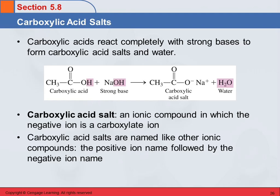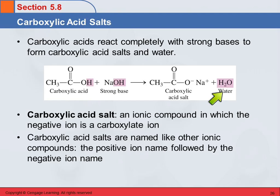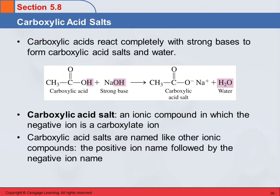We learned in general chemistry that when you react an acid with a base, you get salt and water, and salt is just an ionic compound. The same thing happens when we react a carboxylic acid with a strong base. The hydrogen ion combines with the hydroxide ion to become a water molecule, leaving a sodium ion and a carboxylate ion. This is called a carboxylic acid salt — the carboxylate ion paired with the cation from the strong base.